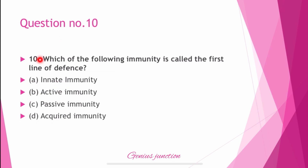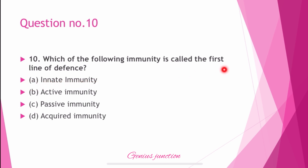Question number 10: Which of the following immunity is called the first line of defense? Options are: innate immunity, active immunity, passive immunity, and acquired immunity. The right answer is A — innate immunity. Innate immunity is called the first line of defense, and it is present in our body before birth.